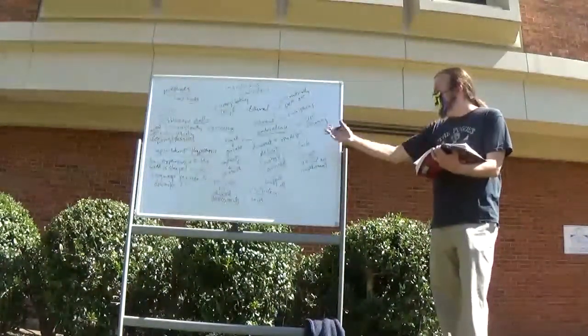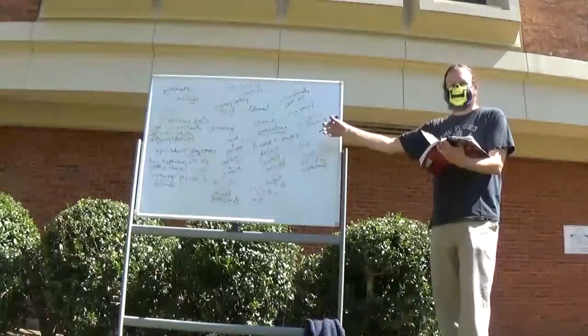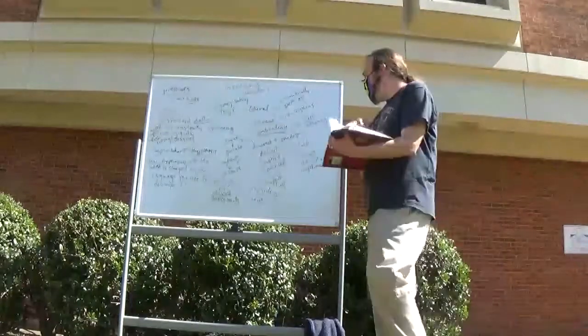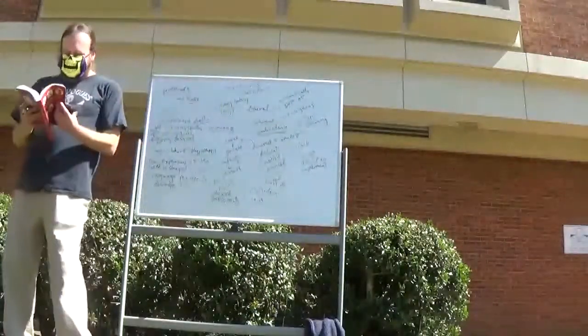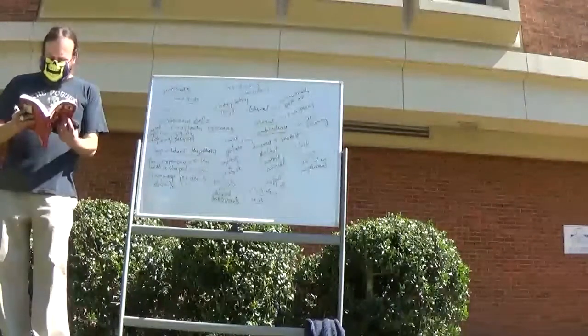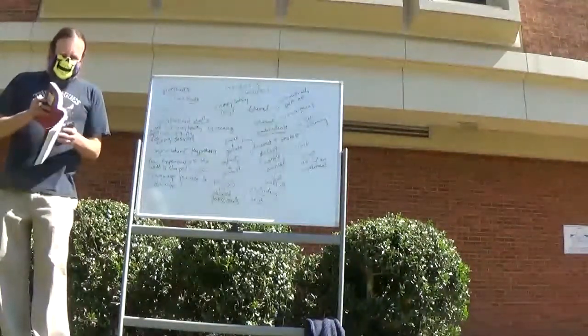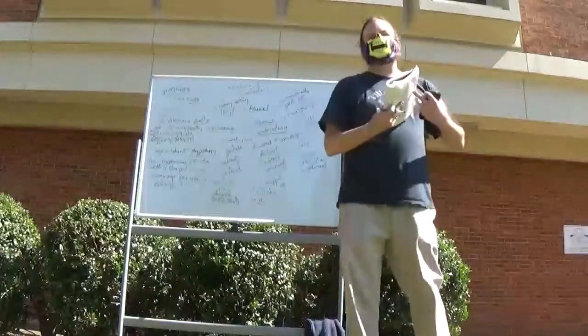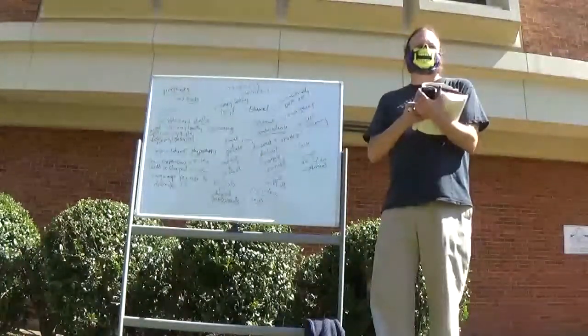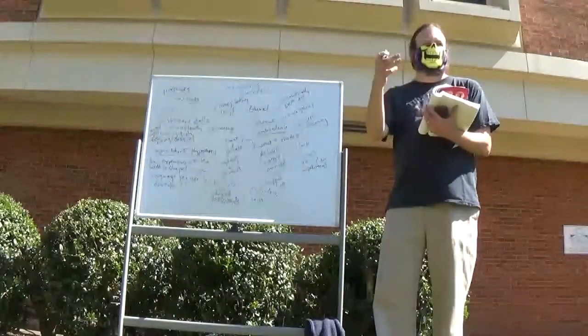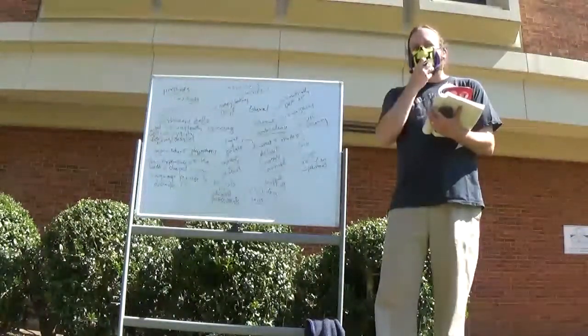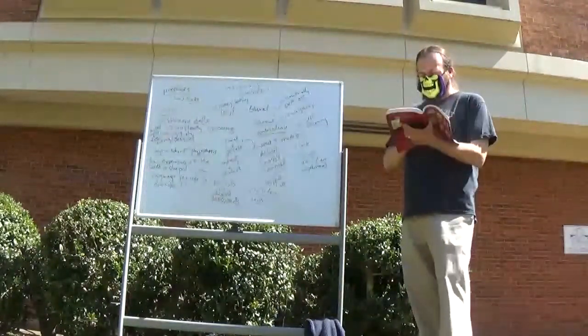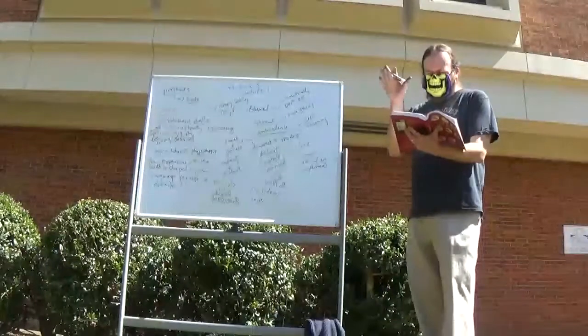And then what does their outsider-dom lead them to believe about Chinese people? So essentially what she's demonstrating is that both of these groups, however educated they are, supposedly, about the culture, that both these groups of outsiders are naive. They both show up with wrong-headed assumptions about the people they're dealing with. And thus, can be easily fooled or easily led to believe something incorrect.